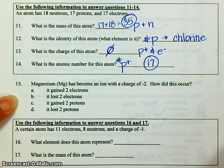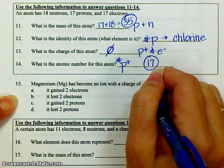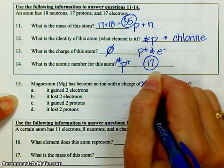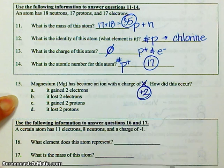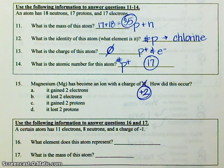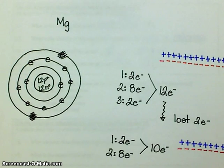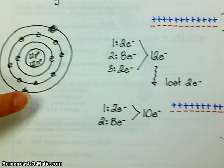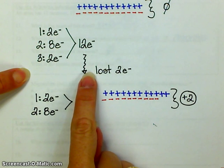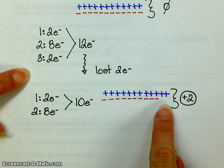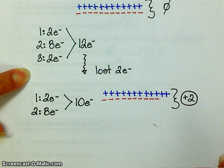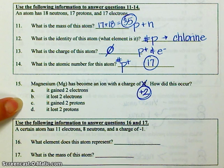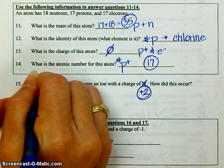Number 15: Magnesium becomes an ion with a charge of plus 2. We actually did this one together in class. So how did magnesium become a plus 2 charge? Magnesium originally has two electrons in the third energy level, but it loses those two electrons and now only has 10 electrons. It has two more protons than electrons, so it becomes a positive 2 charge because it lost two electrons.